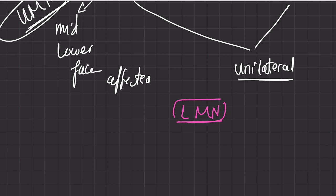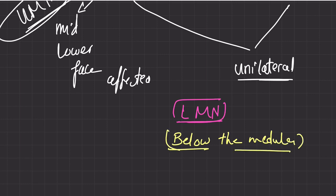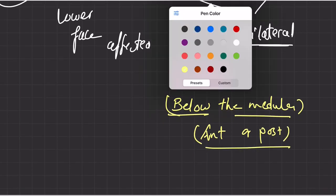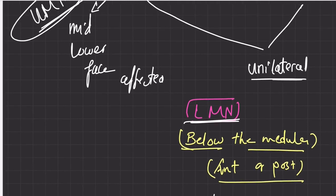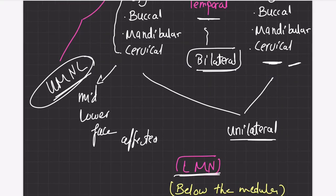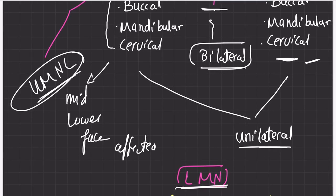For a lower motor neuron injury, the lesion is almost always below the facial nucleus — below the brainstem level. At that point, it doesn't matter whether the anterior or posterior division is affected, because the injury is to the fibers transmitting impulses from both divisions. Therefore, in a lower motor neuron lesion, the entire ipsilateral face is affected.